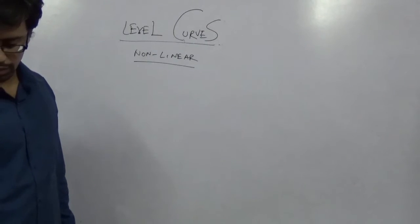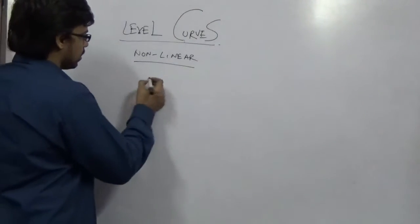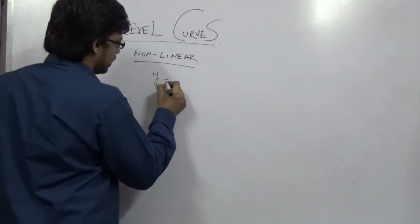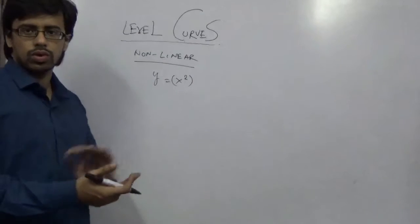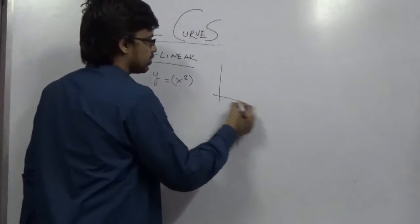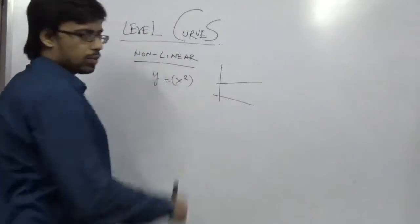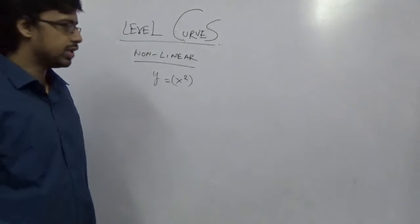Now in a non-linear level curve you need to focus on the equation. In general I am giving you an equation like y equal to x square. Simply y equal to x square. What will be the curve? So obviously it is not going to be a straight line because one power is 2. So how are you going to draw level curve for this?